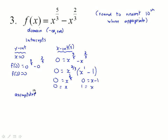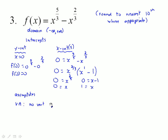For asymptotes, a vertical asymptote could be found by looking for any inadmissible values, particularly in the denominator. There are none because there is no denominator with this function, so there is no vertical asymptote.